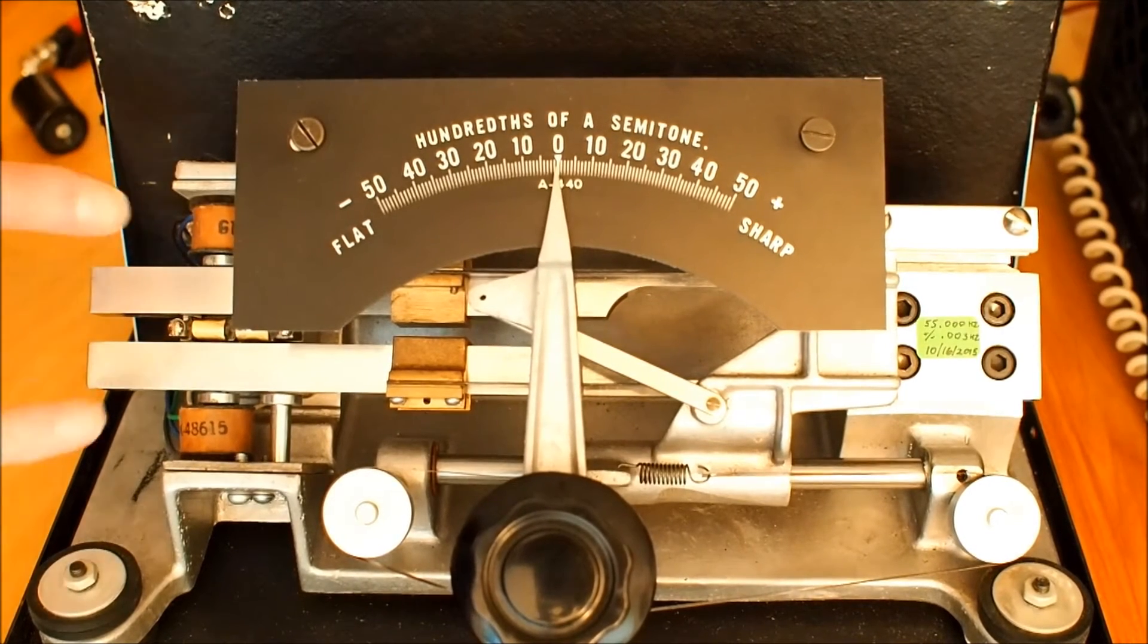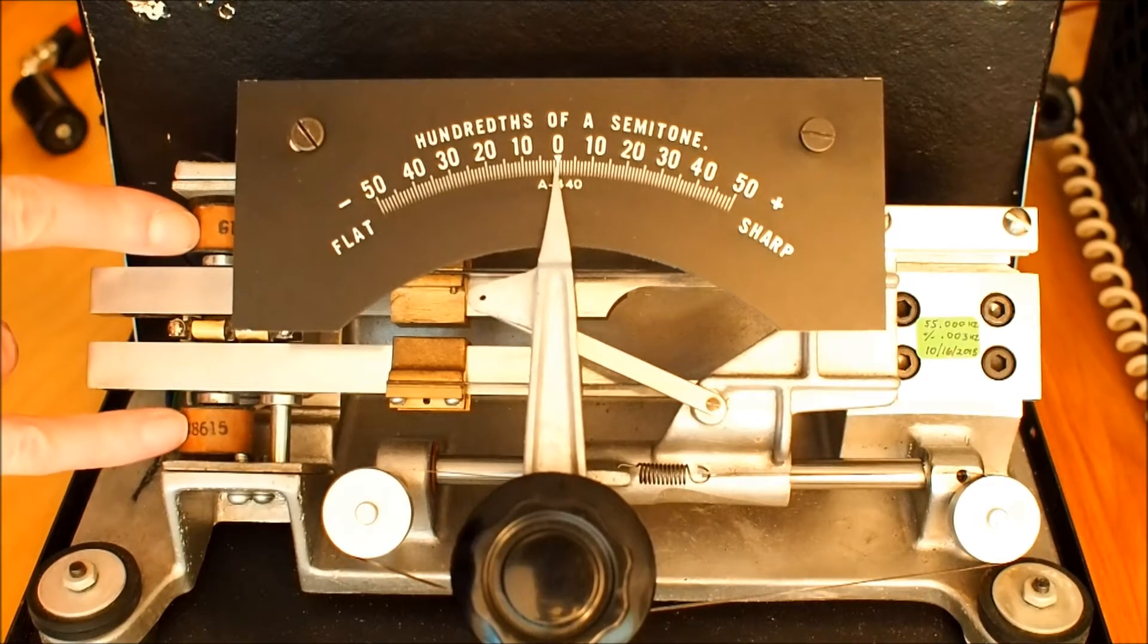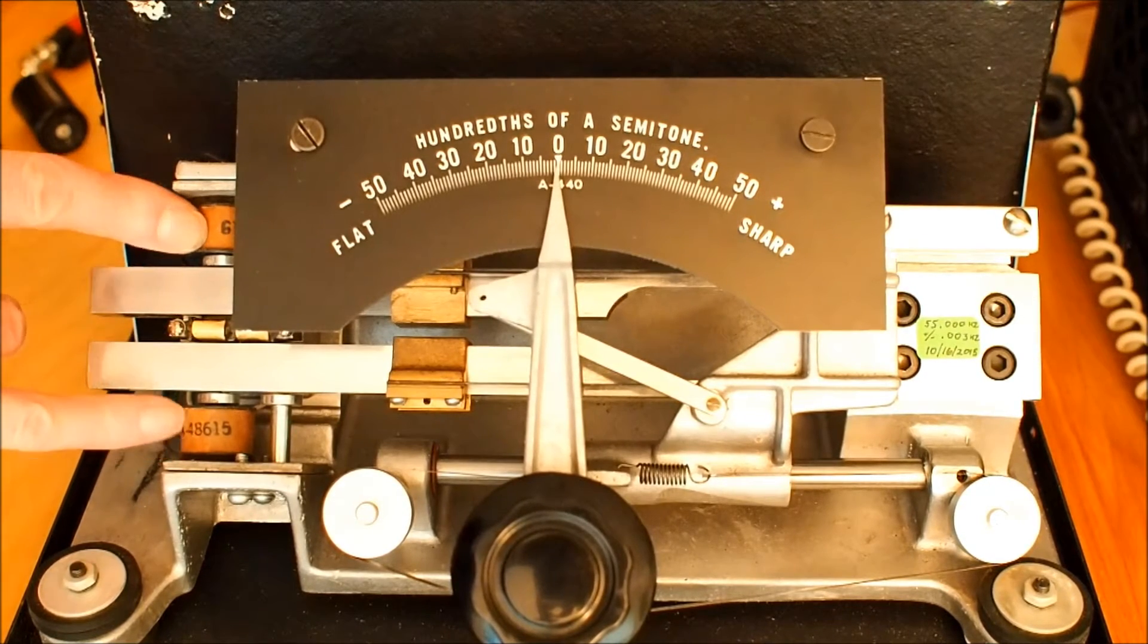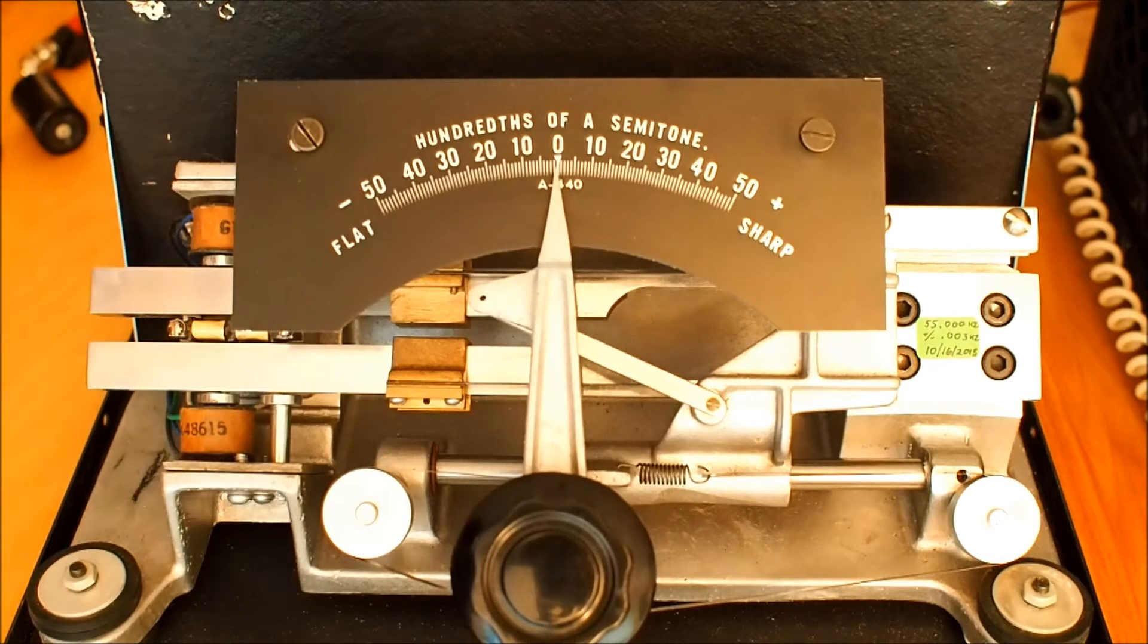So, the answer is, right here, you see these two coils. And what these two coils do is they drive the tuning fork.